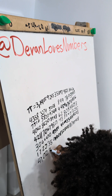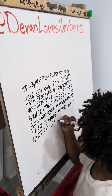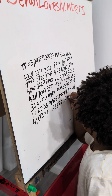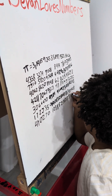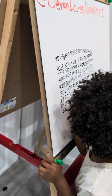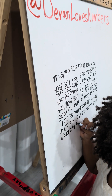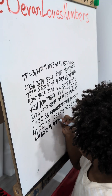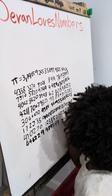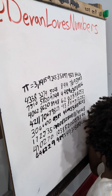0, 2, 7, 0, 1, 9, 3, 8, 5, 2, 1, 1, 1, 1, 0, 5, 5, 5, 5, 9, 6, 4, 4, 6, 2, 2, 9, 4, 8, 9, 5, 4, 9, 3, 0, 3, 8, 1, 9, 6, 4.